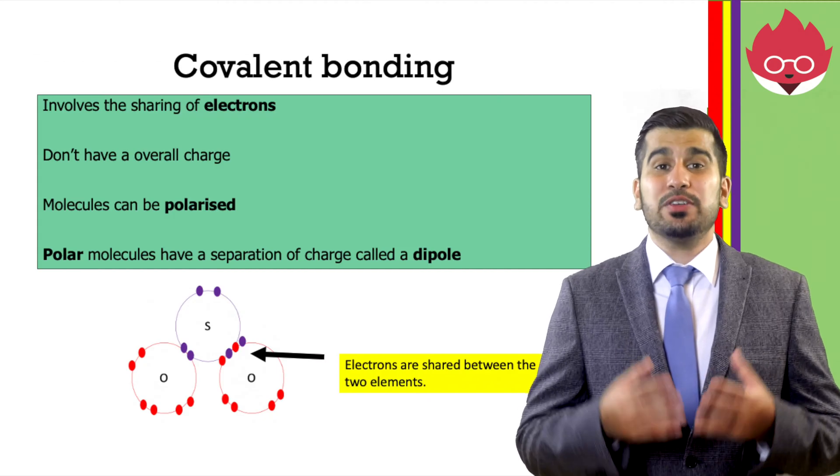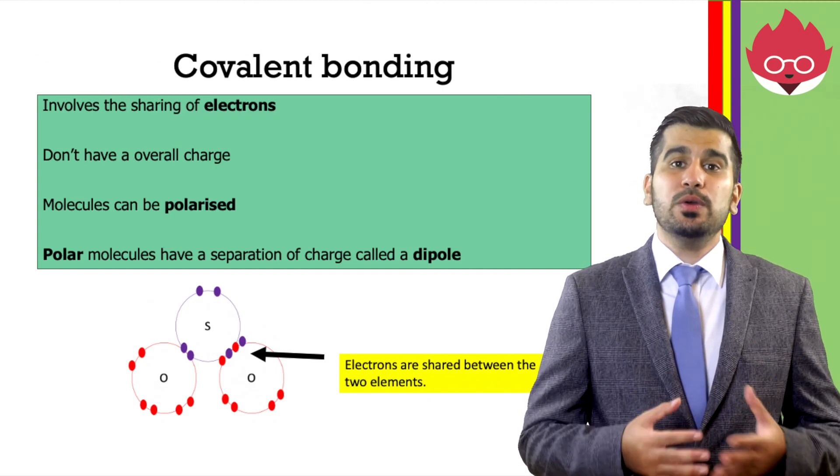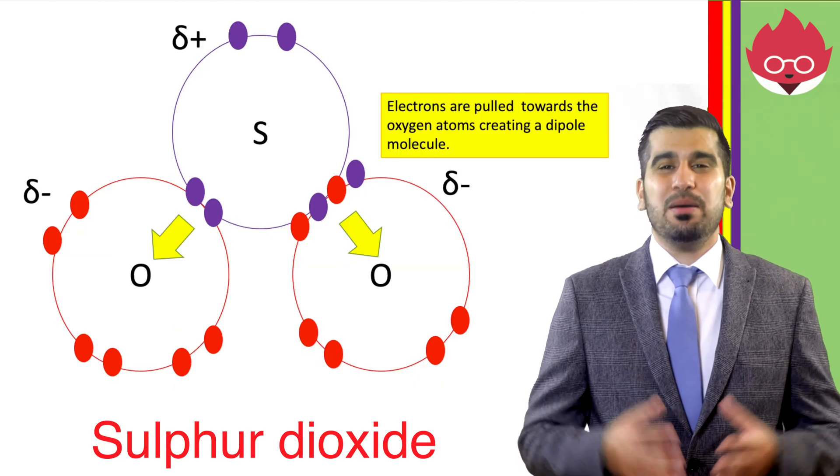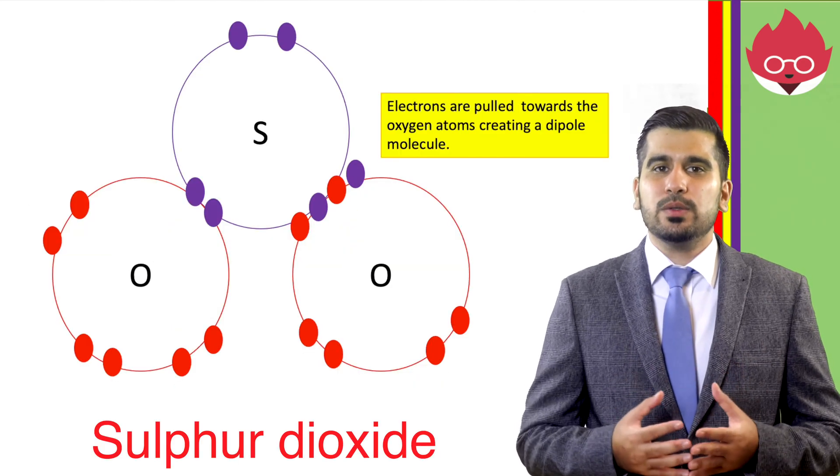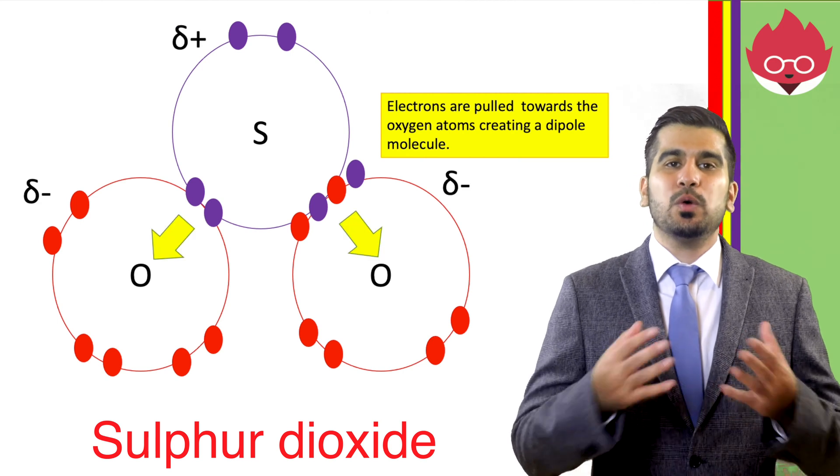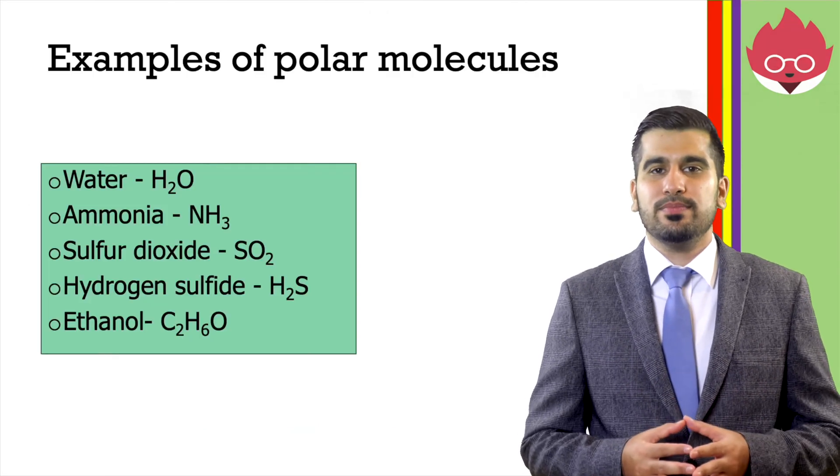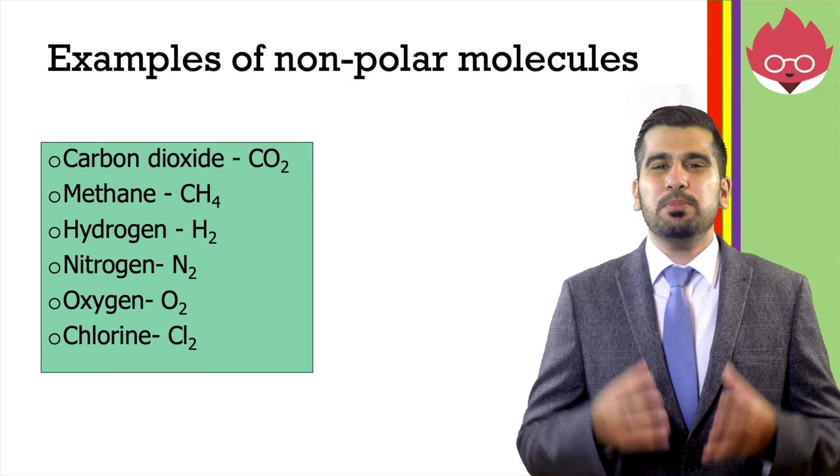In covalent bonding, electrons are shared. These molecules don't have an overall charge. However, sometimes these molecules can become polarized. Polar molecules have a separation of charge called a dipole. Here are some examples of polar molecules. Here are some examples of non-polar molecules.